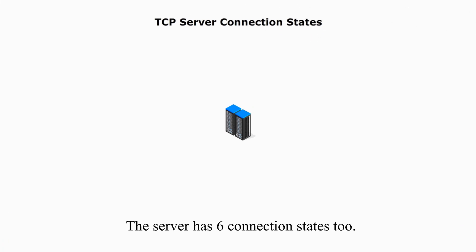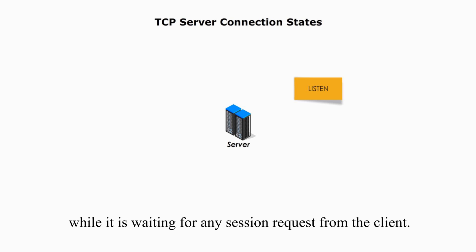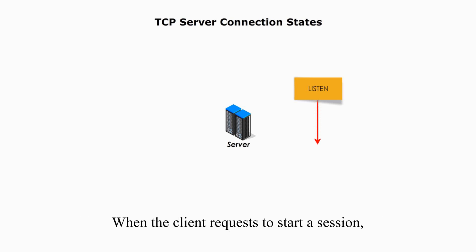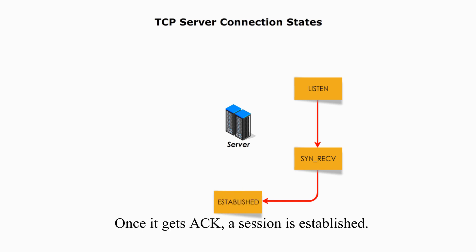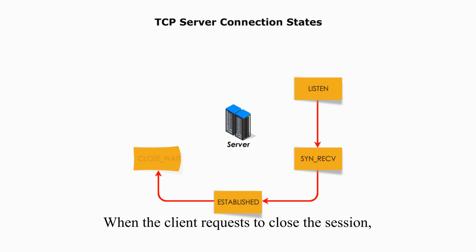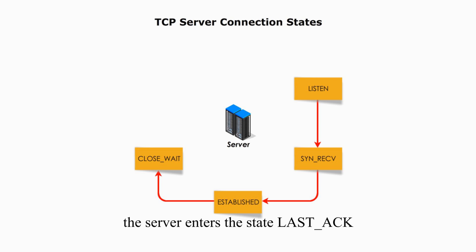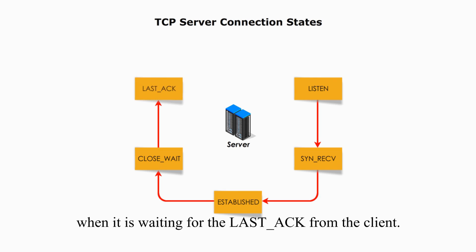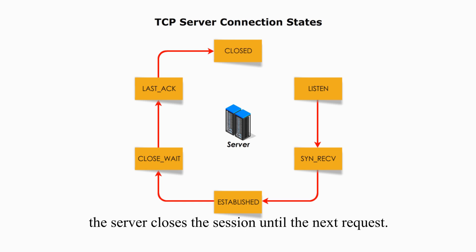The server has six connection states too. The starting point is the LISTEN state while it waits for any session request from a client. When the client requests to start a session, the server replies with confirmation and waits for the client's ACK. Once the server gets ACK, a session is established. When the client requests to close the session, the server replies with ACK. After it sends a FIN message, the server enters the LAST-ACK state, waiting for the last ACK from the client. Once it gets that ACK, the server closes the session until the next request.